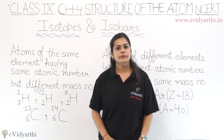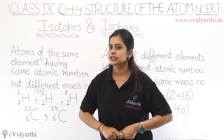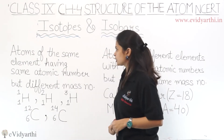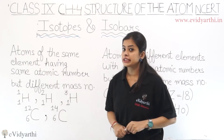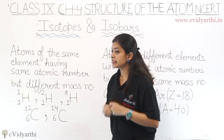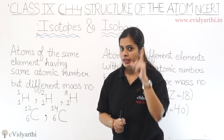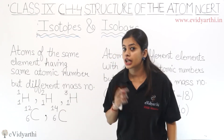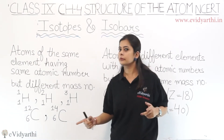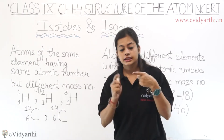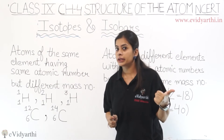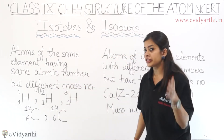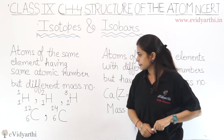Let's start with our last topic which is isotopes and isobars. Let's first look at the definition of isotopes: atoms of the same element having the same atomic number. To understand the difference between isotopes and isobars, learn the definition this way — same element, same atomic number. It will be an isotope. What is the difference? They should have different mass numbers.